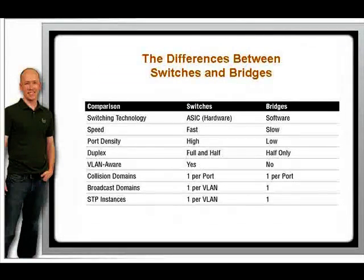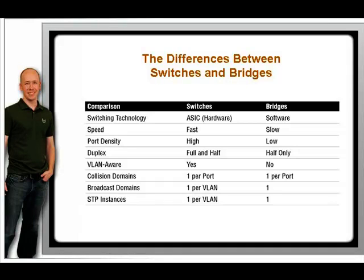We have been using the term switch interchangeably with bridge, but there are some significant differences you need to know about. The key difference is in the technology. Bridges, which are older, do all the work of frame analysis and decision making in software, using the CPU to analyze data stored in RAM. Switches use ASIC, or application-specific integrated circuit chips — specialized processors designed to do one thing: switch frames. Depending on the model of switch, the speed difference can be astounding. A bridge typically switches around 50,000 frames per second, whereas a lowly 2950 switch can move an average of 12 million frames per second. This, of course, depends on the frame size.